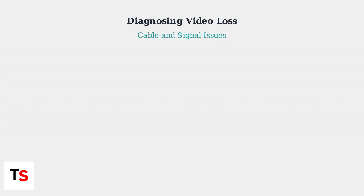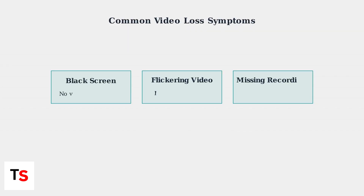Experiencing video loss with your Reolink camera? Video loss is a common issue that can manifest in several ways, and identifying the symptoms is the first step to solving the problem. Video loss typically appears as a black screen where your camera feed should be, flickering or intermittent video, or missing segments in your recordings.